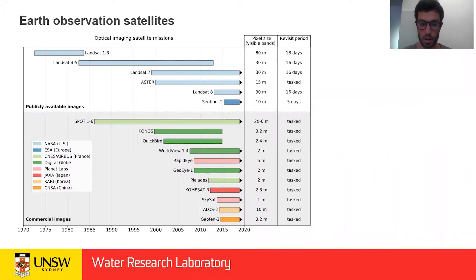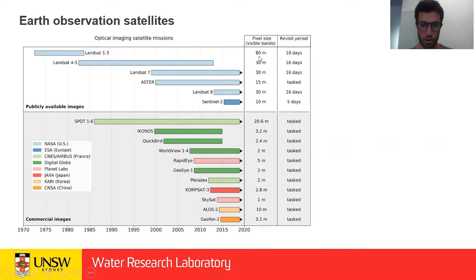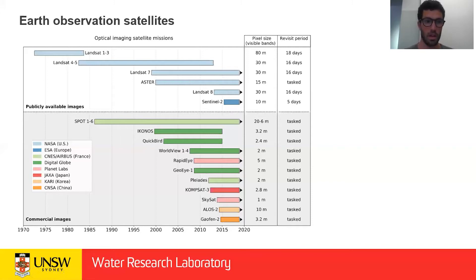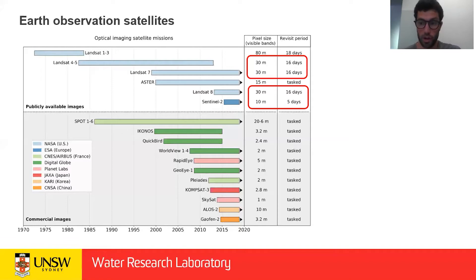This is a summary of the different optical imaging satellite constellations that are out there. On the top panel we have the publicly available images, which are the ones we'll be focusing on here. It all started with Landsat 1 in the early 70s, but Landsat 1 to 3 have a resolution of 80 meters per pixel — too coarse for coastal applications. From the early 80s, we have Landsat 4 and 5 with 30 meters per pixel at a 16-day revisit period, then Landsat 7, and then Landsat 8 and Sentinel-2. That's the four missions we're going to be using in CoSat.